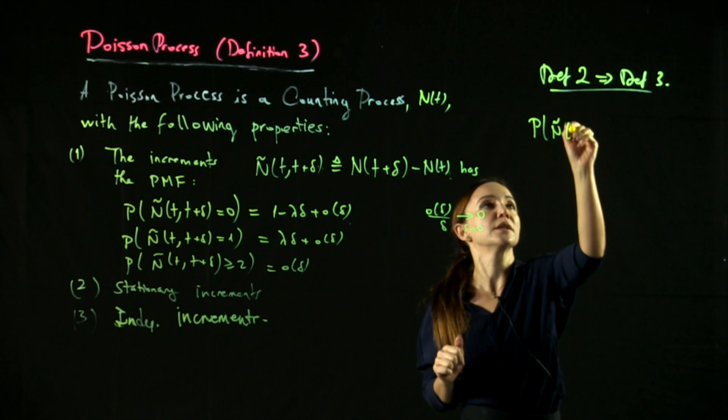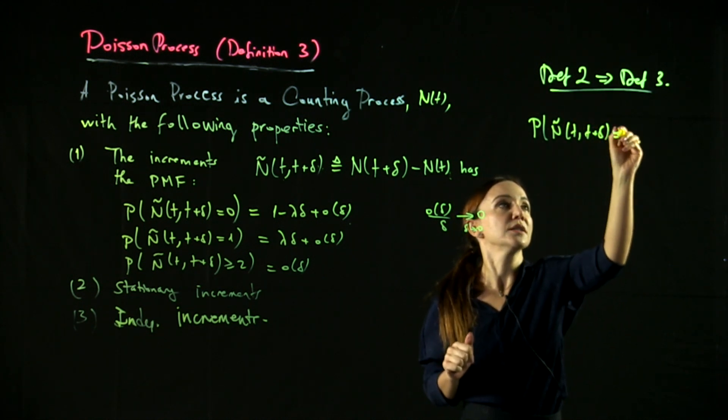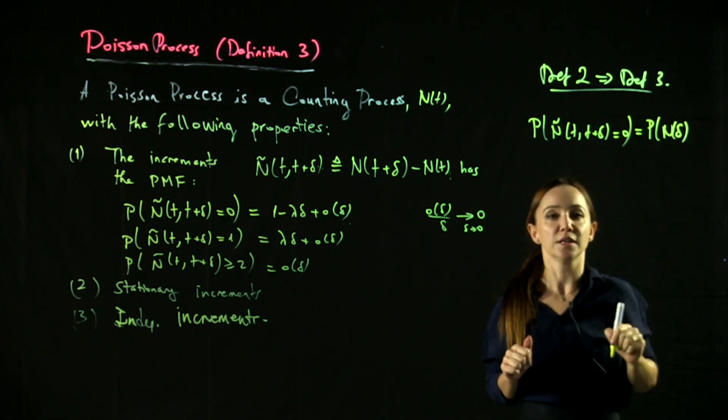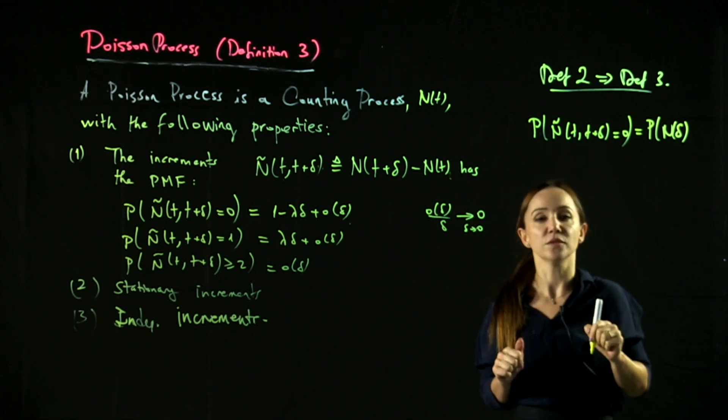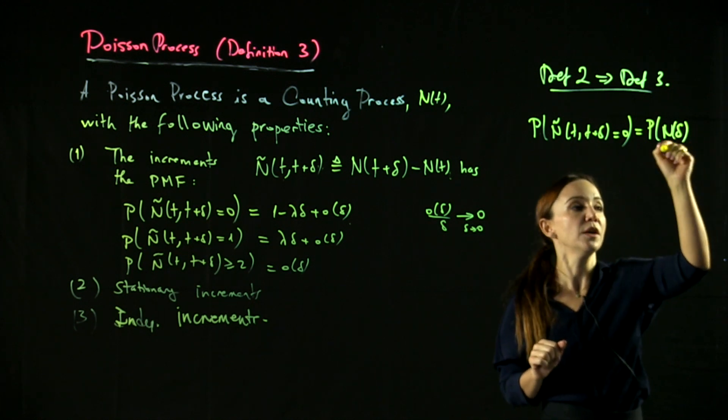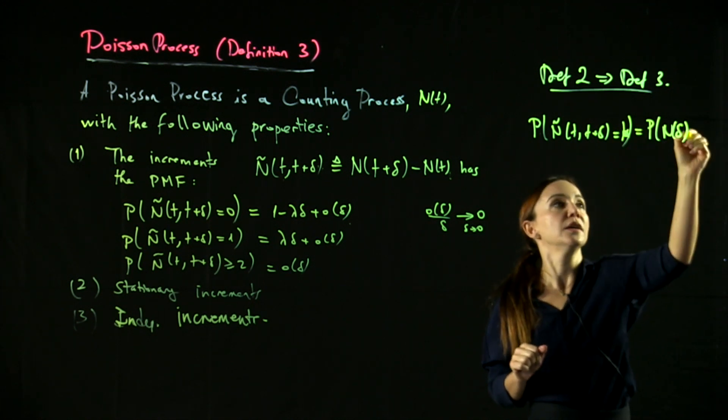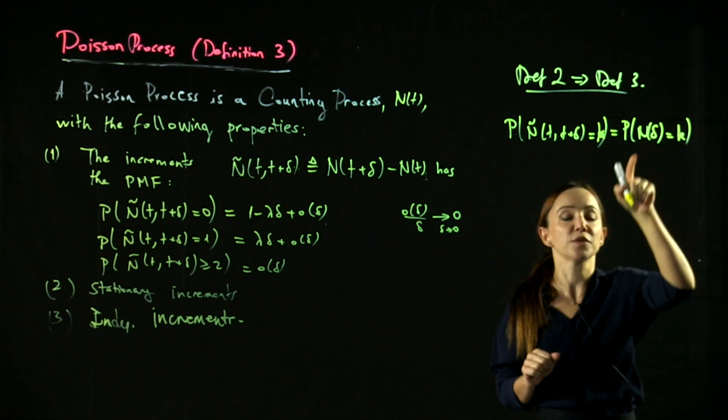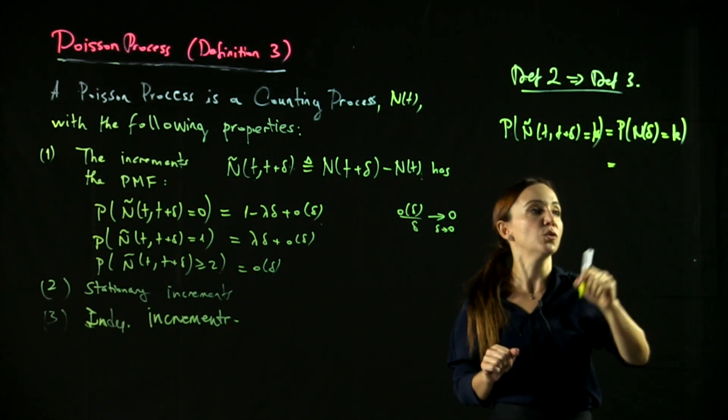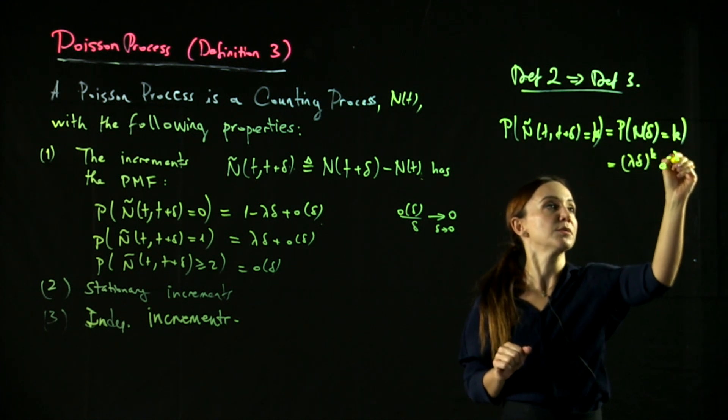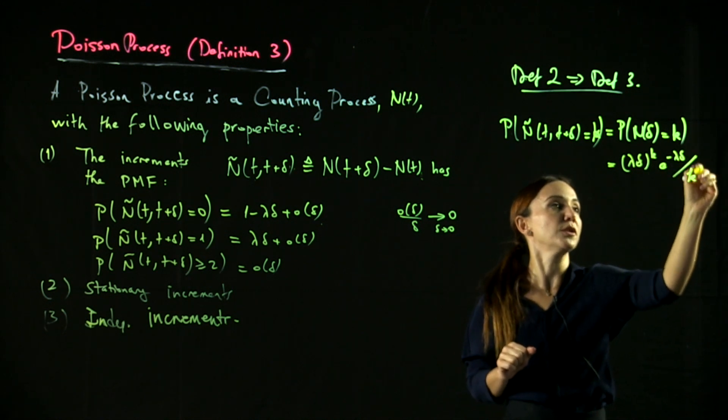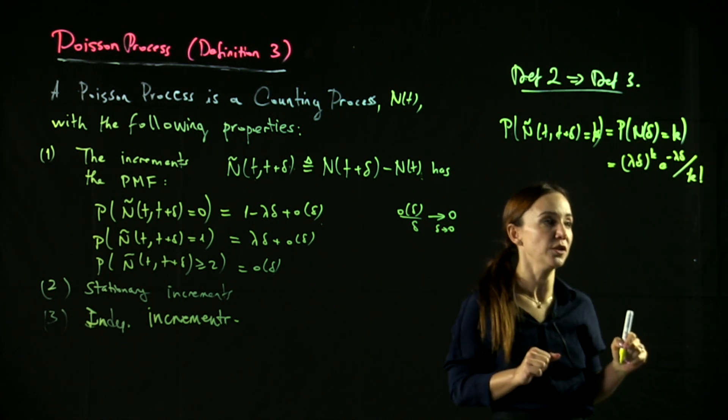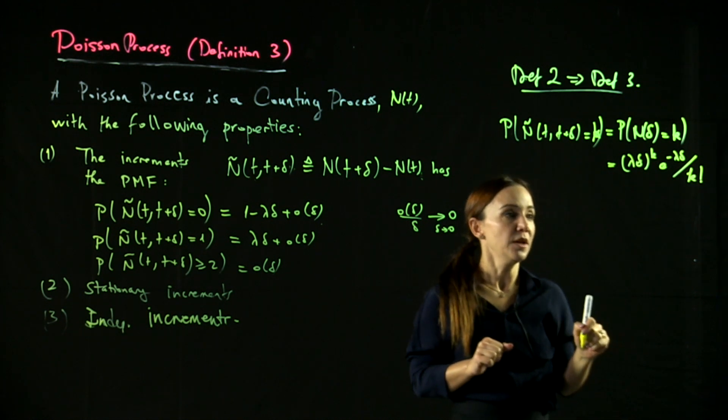The probability that the increment has the value zero. Well, this is the probability that the number of arrivals in a delta interval, in an amount of time delta. First of all, let's do this for general k. The probability that there are k arrivals in an amount of time delta is equal to lambda delta to the k, e to the minus lambda delta divided by k factorial by definition 2. Now, we can open this in a Taylor series expansion.